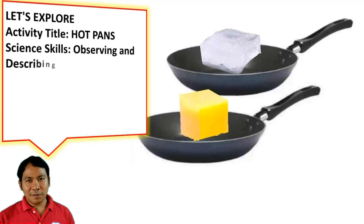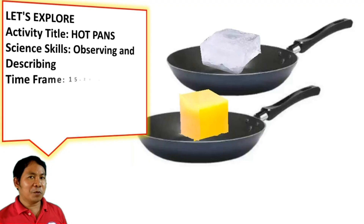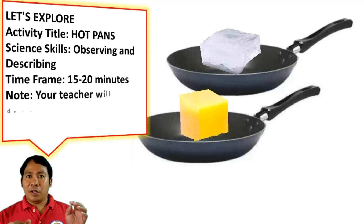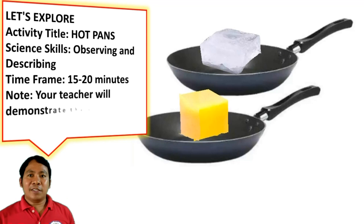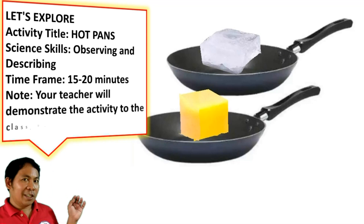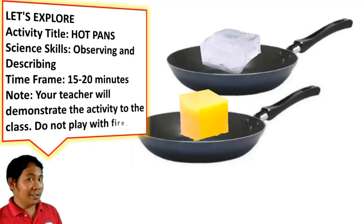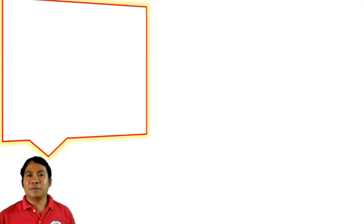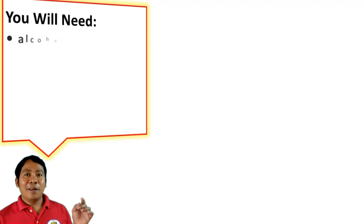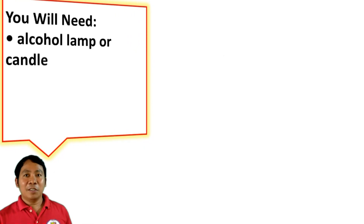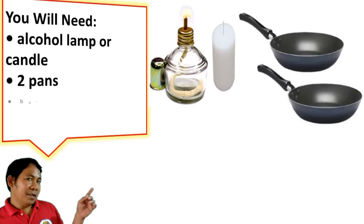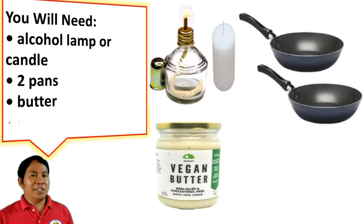Let's explore. Activity title: What Happens. Science skills: observing and describing. Time frame: 15 to 20 minutes. Note: your teacher will demonstrate the activity to the class. Do not play with fire. You will need an alcohol lamp or candle, two pans, butter, and ice cubes.